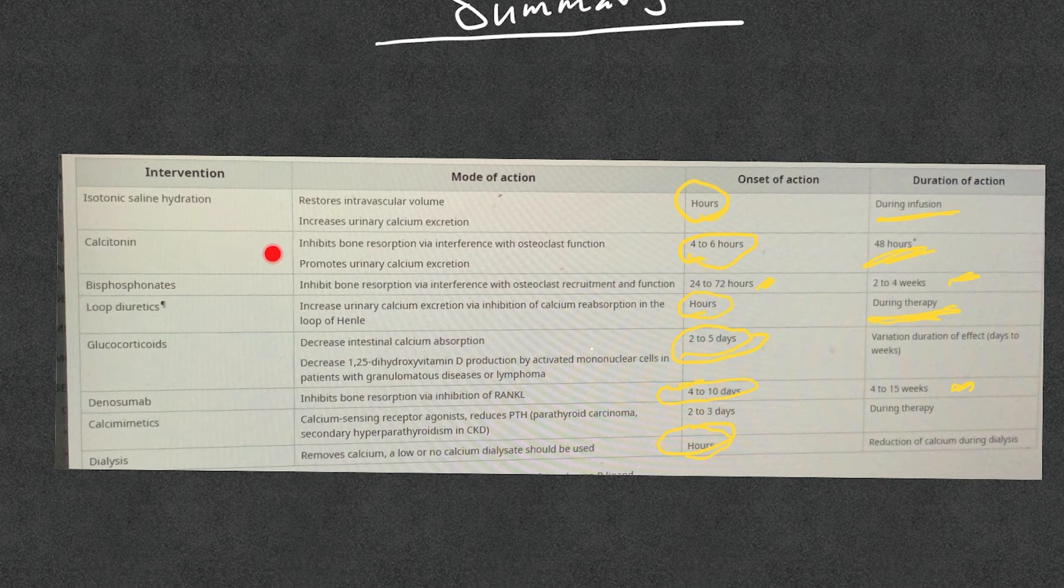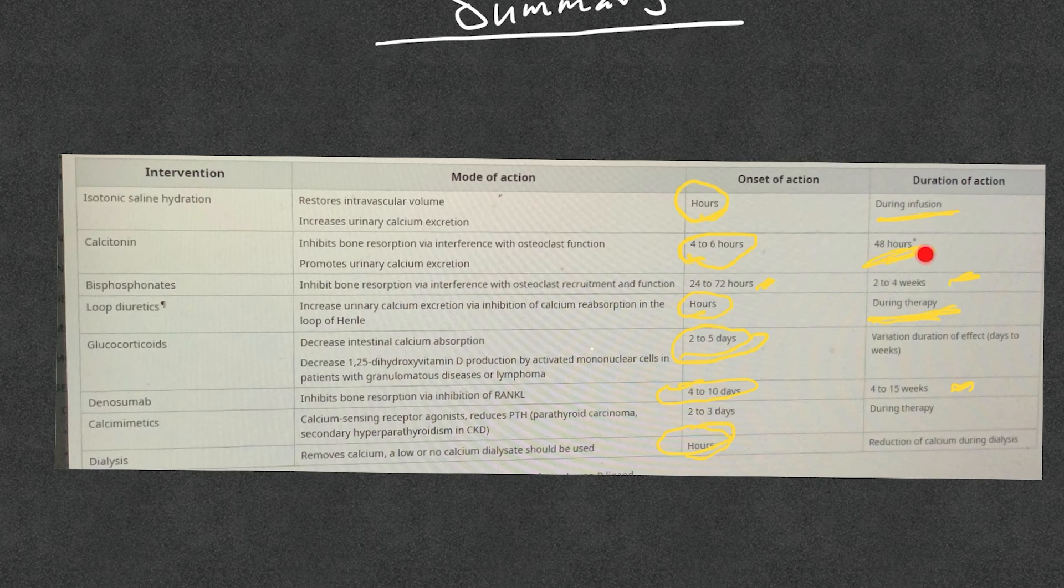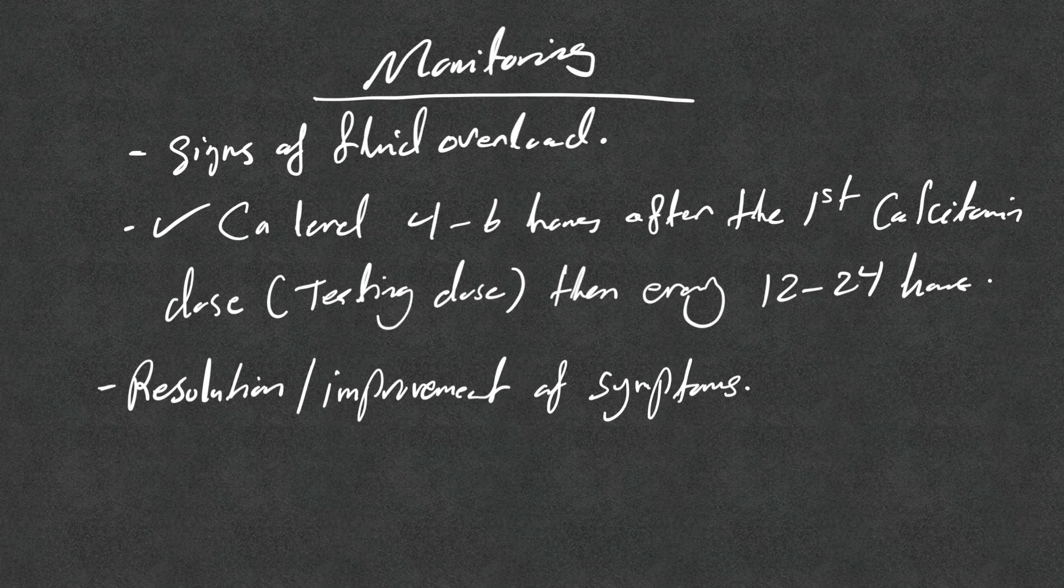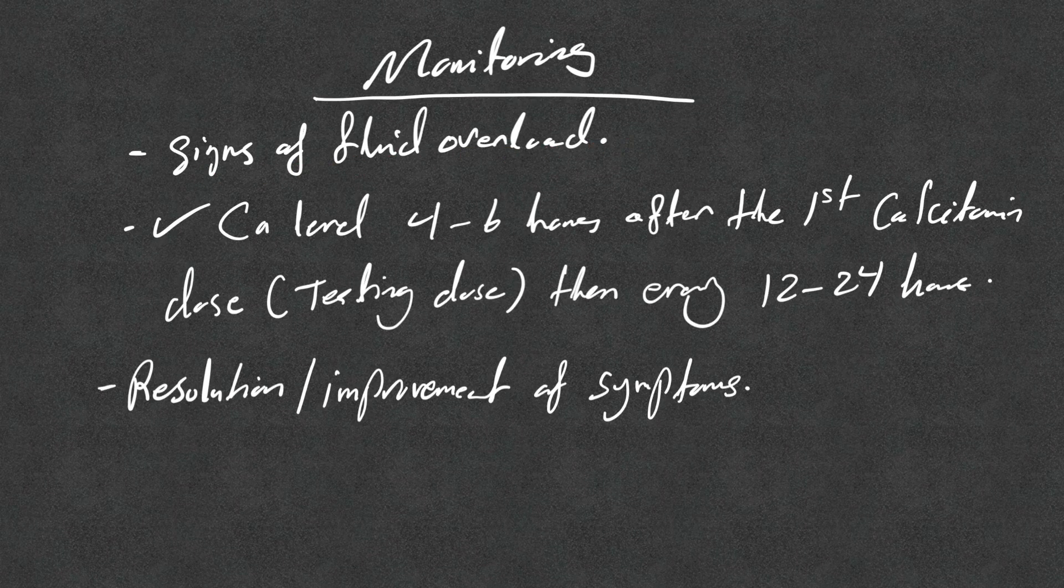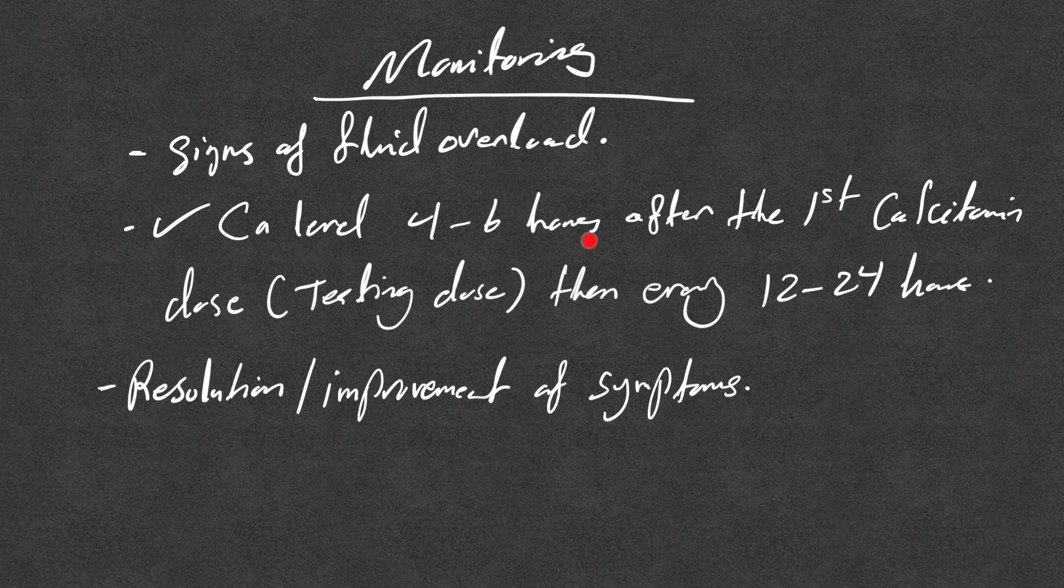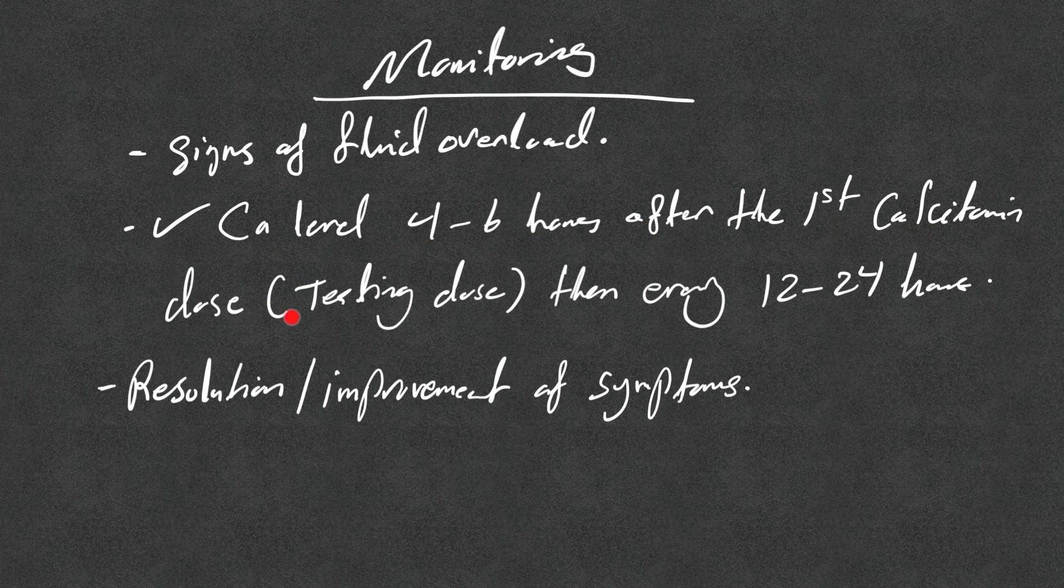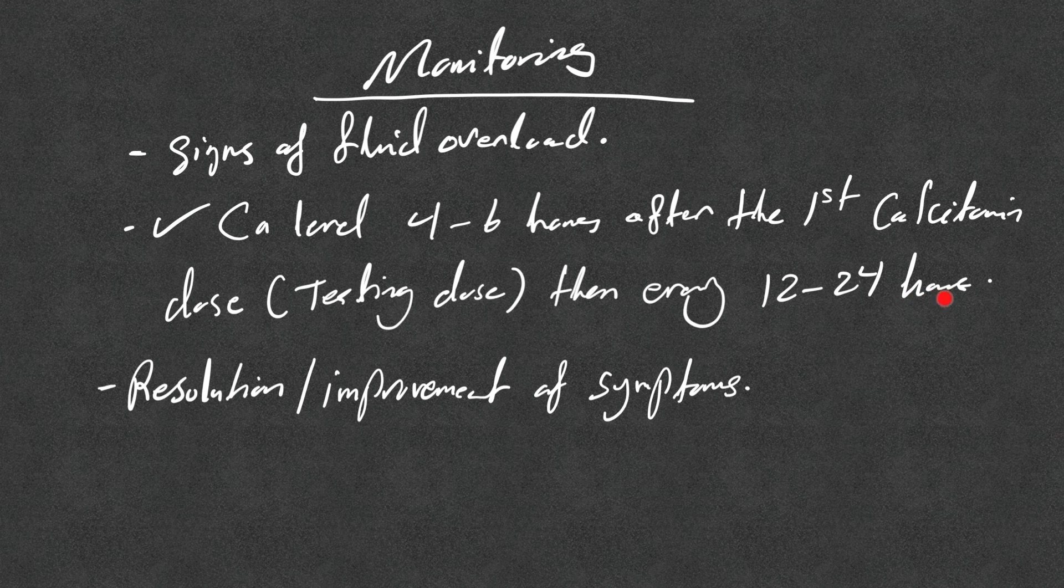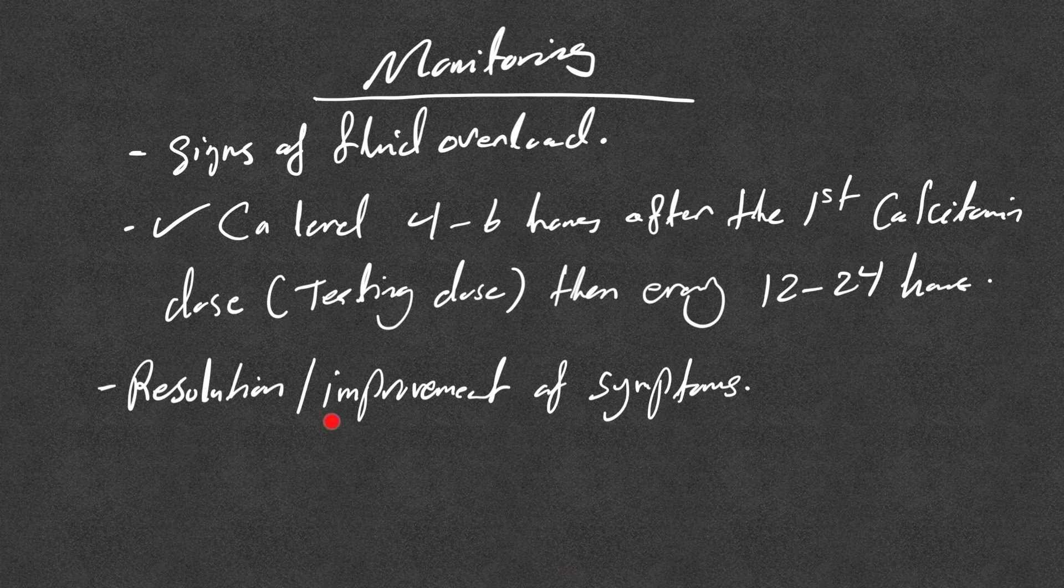Monitoring: monitor for signs of fluid overload of course. Check calcium level 4 to 6 hours after the first calcitonin dose, the testing dose, then every 12 to 24 hours, and monitor resolution or improvement of symptoms. And remember to treat the underlying problem: primary hyperparathyroidism, tumor, granulomatous disease, etc.